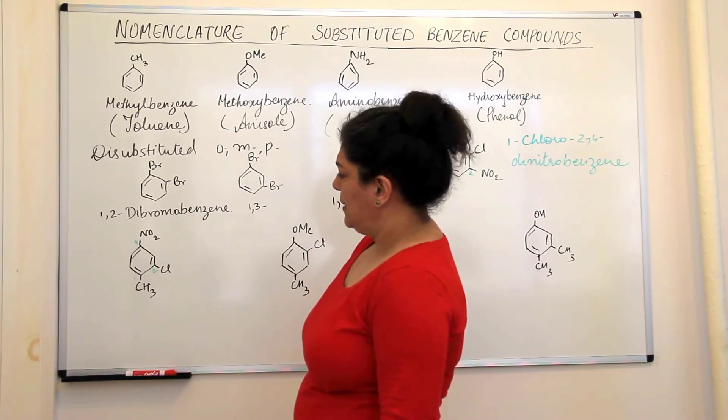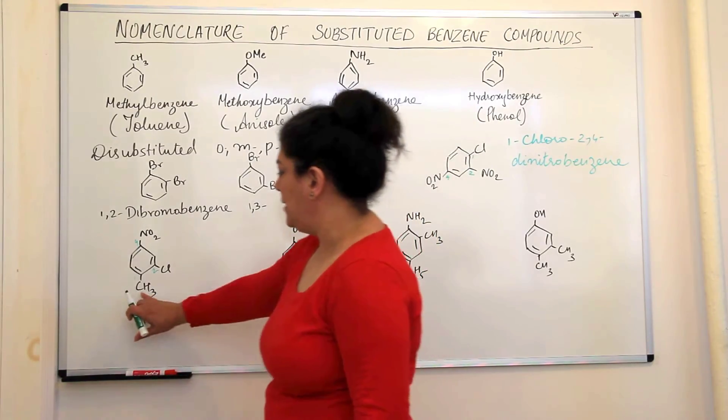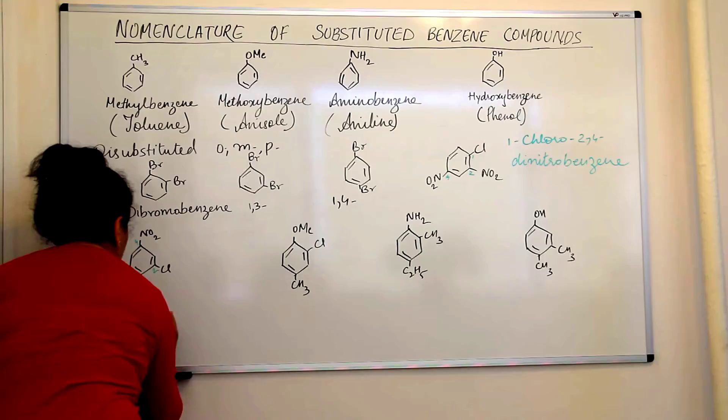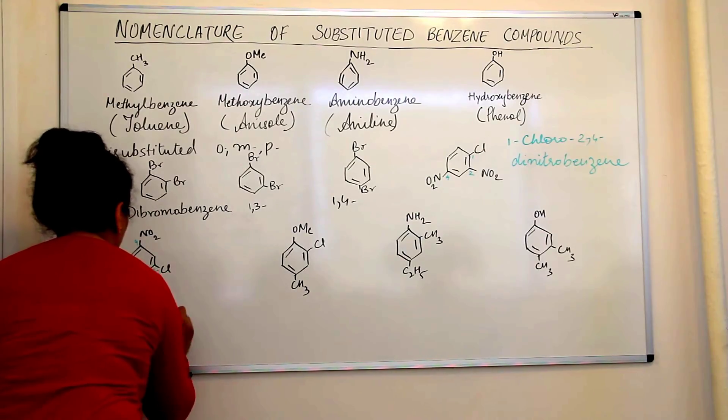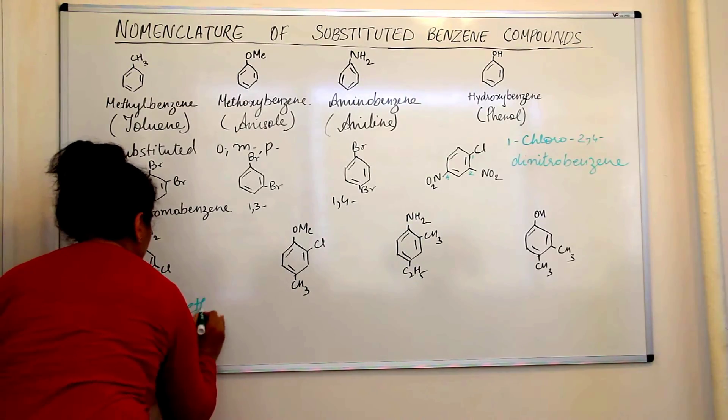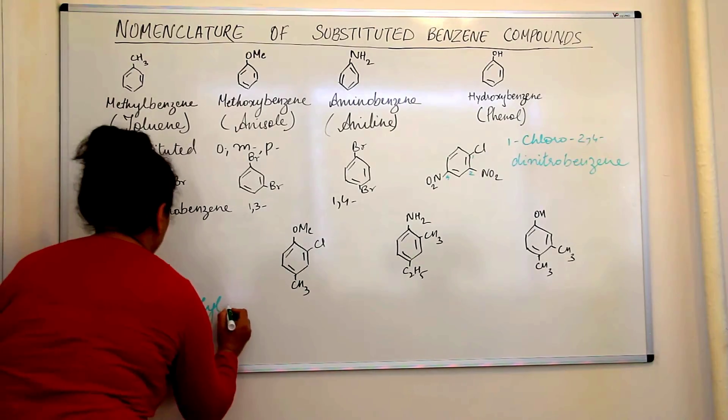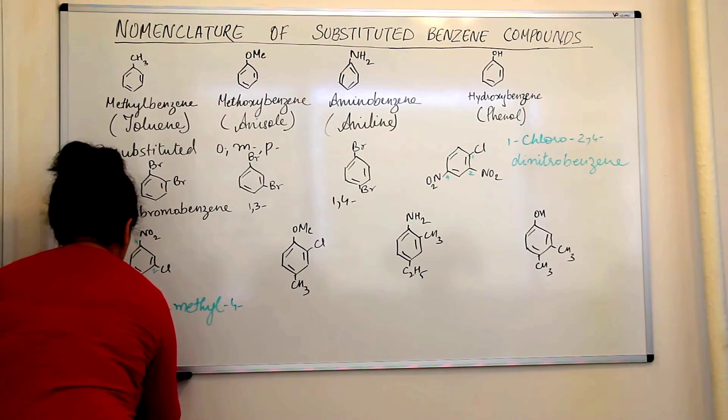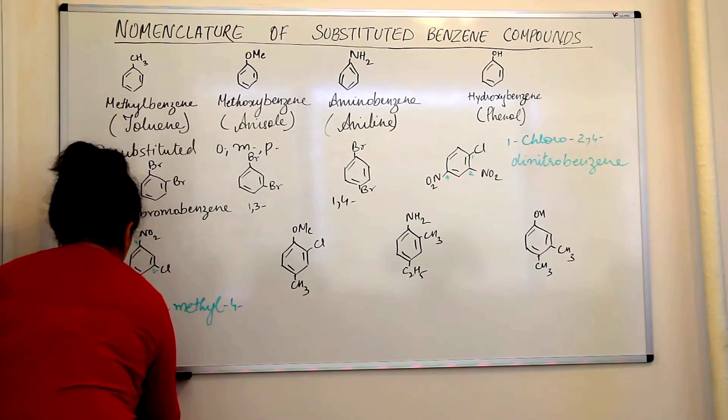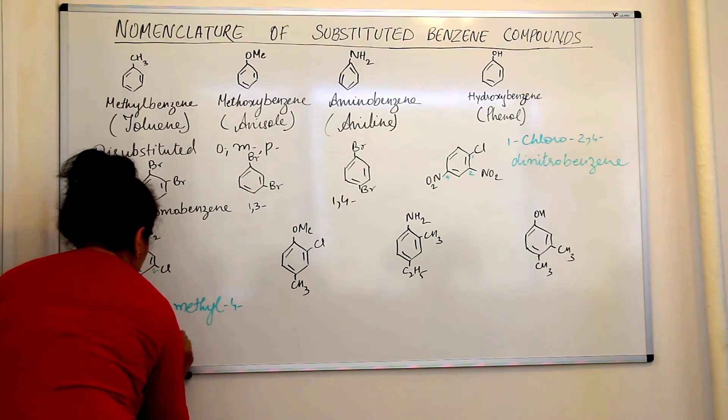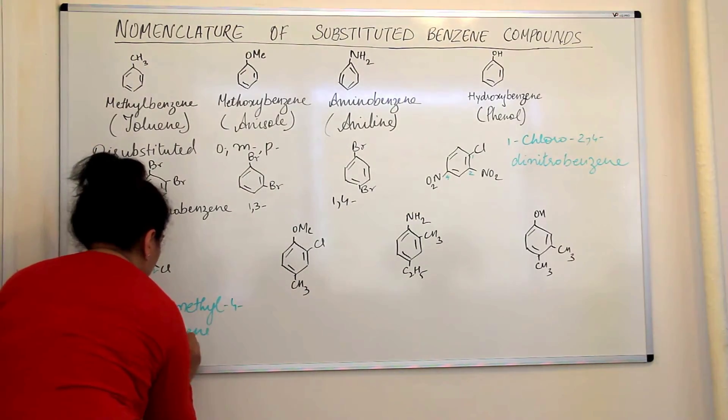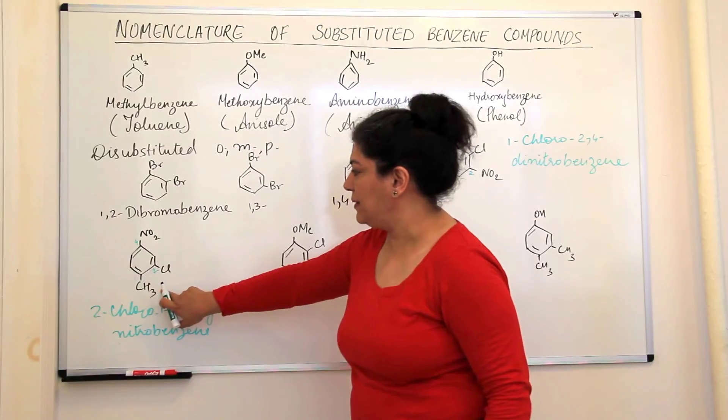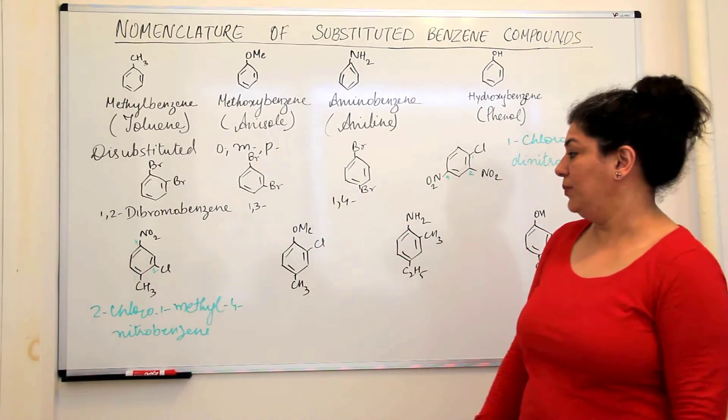So, chloro should come first, C-M-N. Methyl should come second and then nitro. So, we write this as two, chloro, one, methyl and four, nitro, sorry, small n, it will not be large n, nitro-benzene. I hope I am clear. This would be two chloro, one methyl, four nitro-benzene.